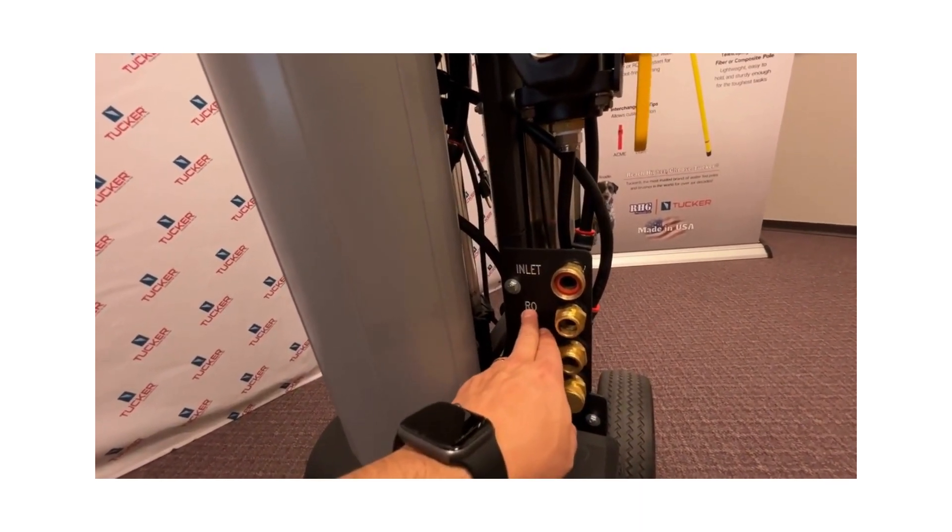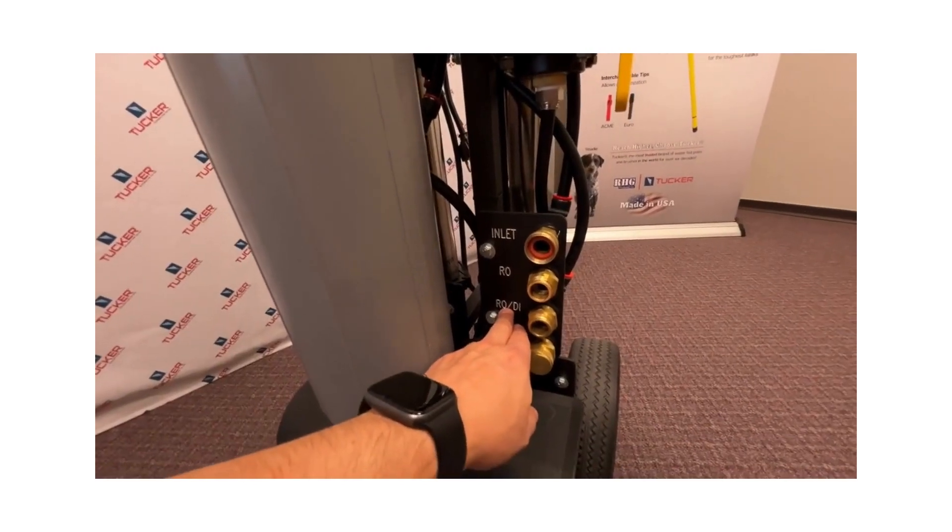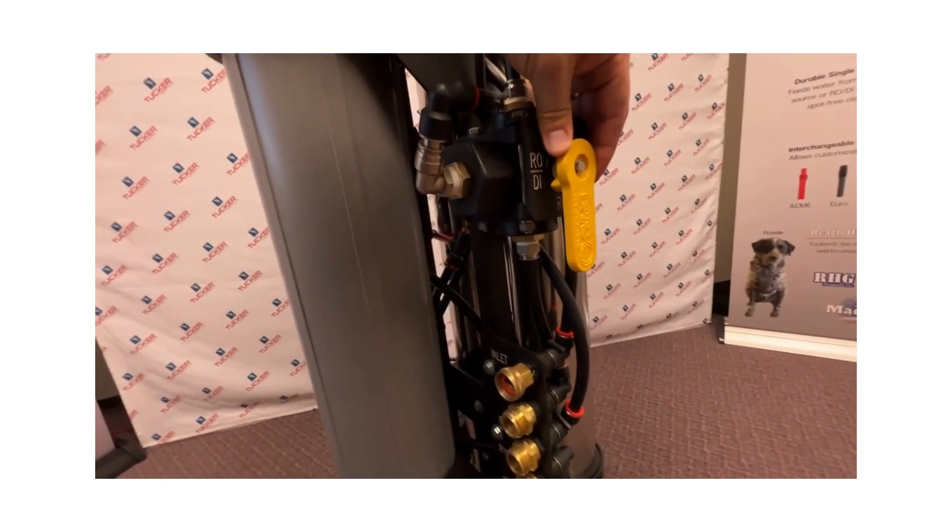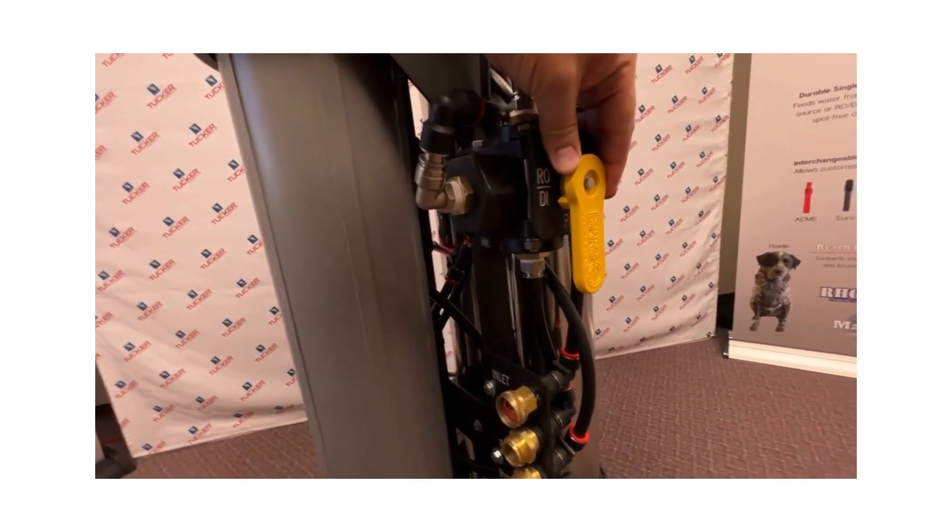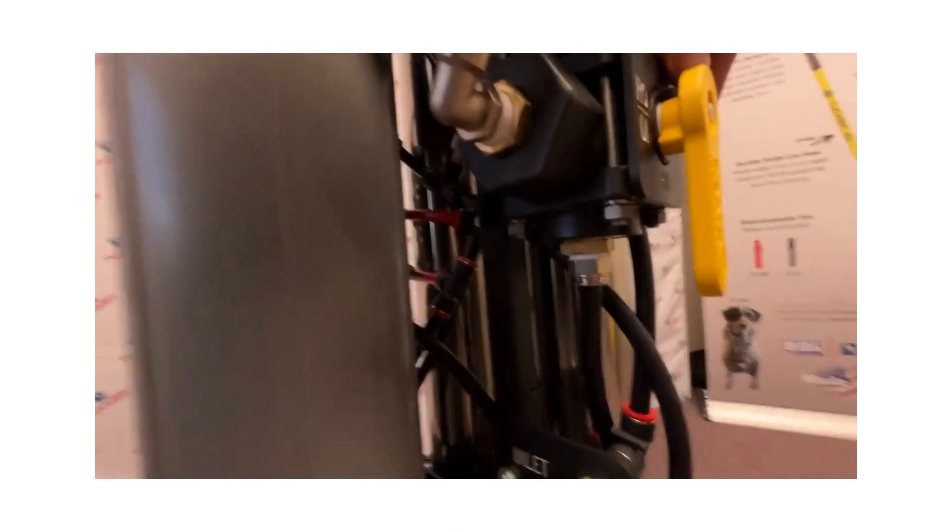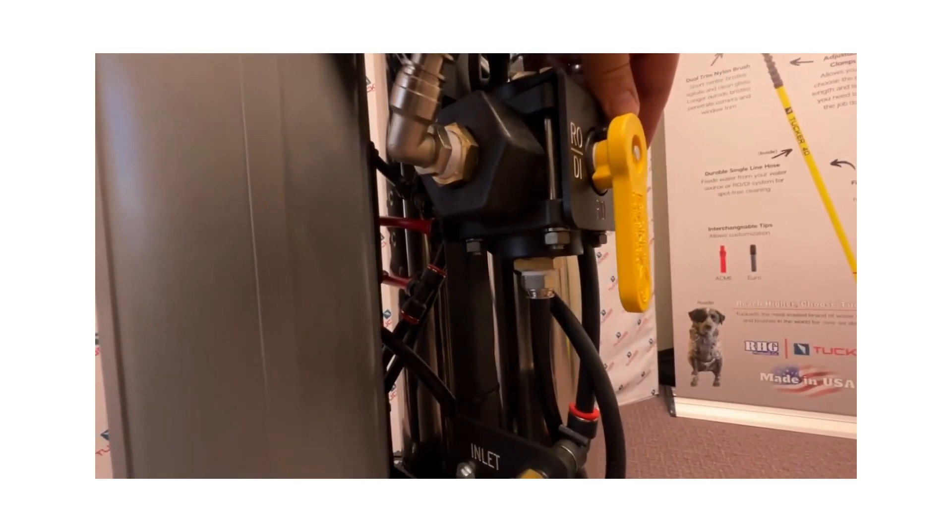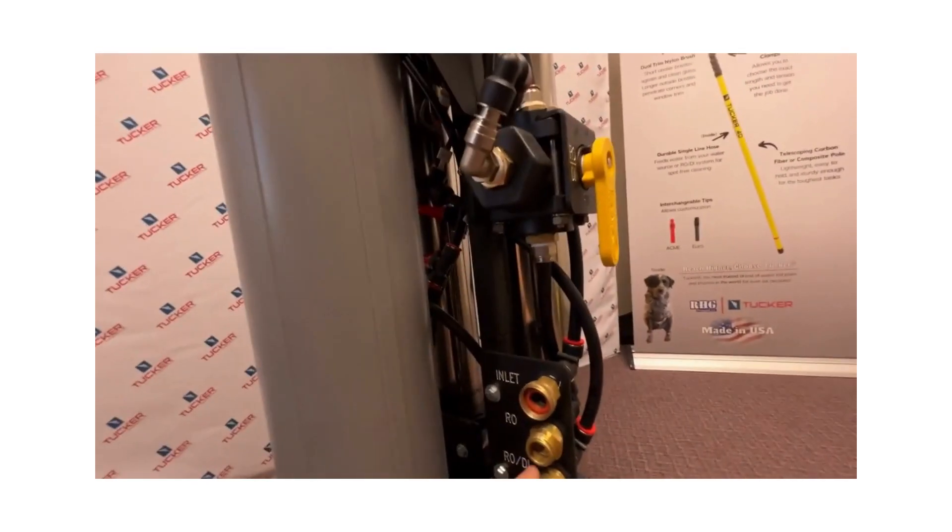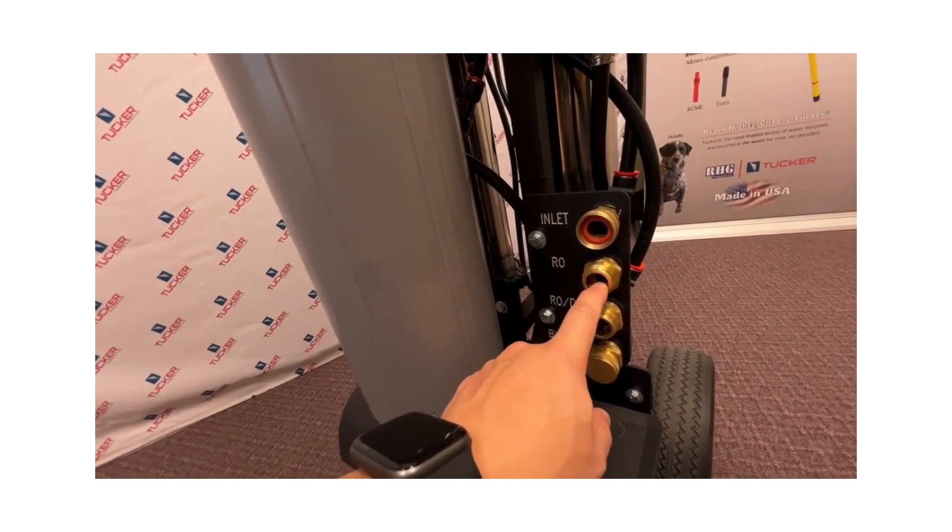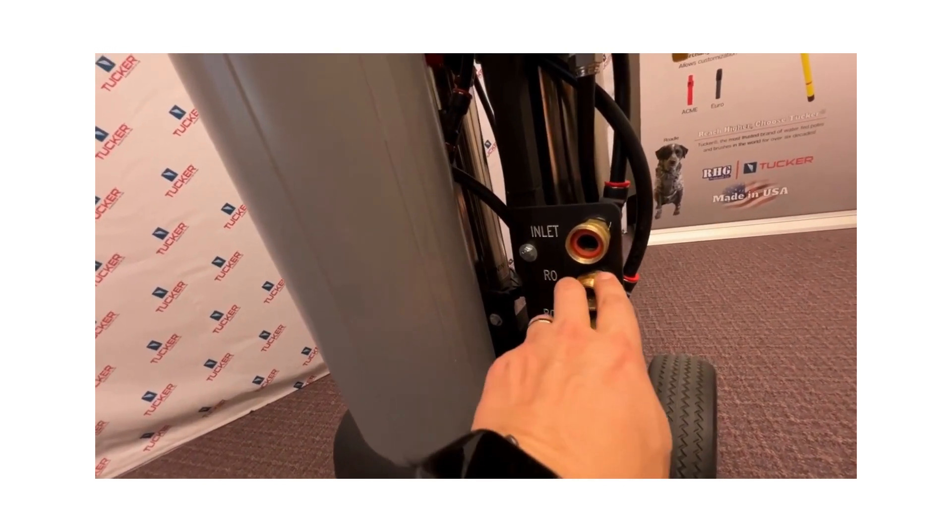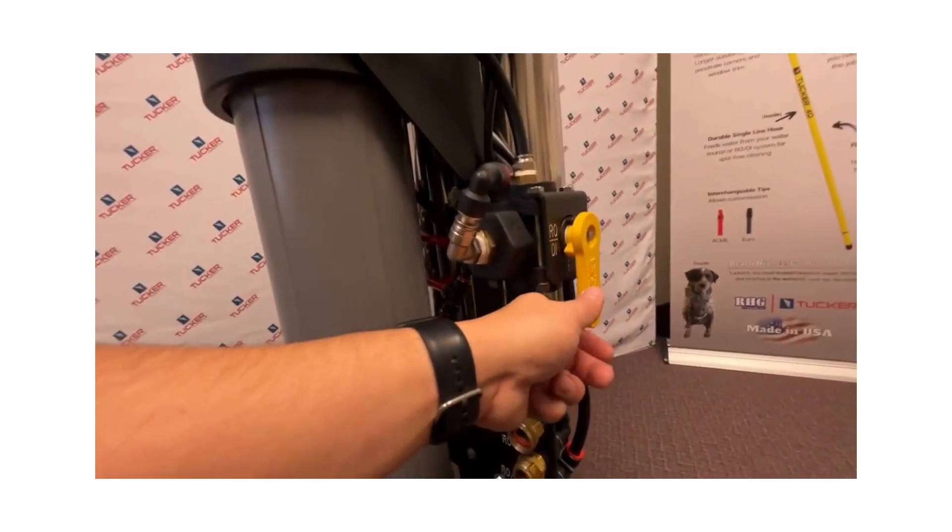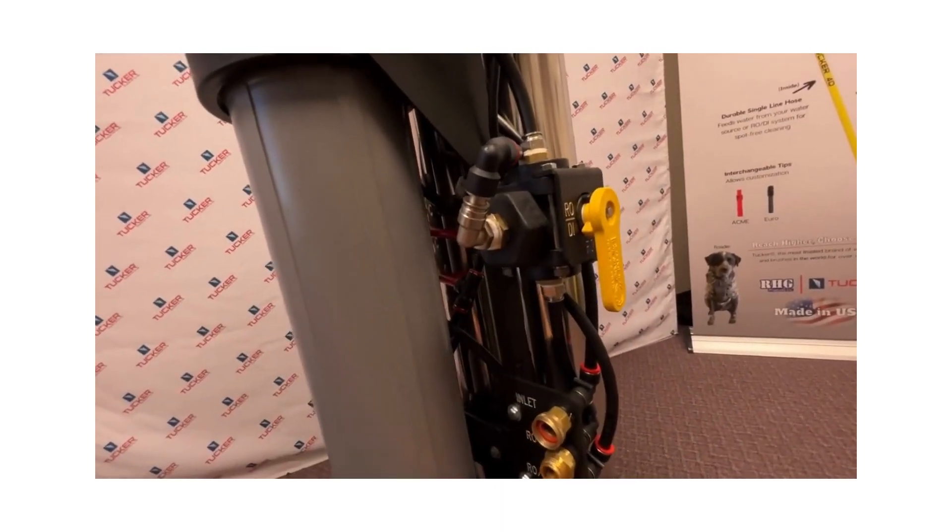You do have the option with this valve here if you're in an area that has good water quality coming out of the RO only, you can switch it. As you can see, right now it's currently in RO, so you'll make sure you have either your hose tubing or most likely a hose reel connected to your RO port. And then when you want to switch it to the RO DI, just flip it over and have your hose connected to here.